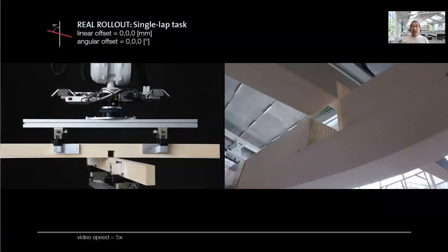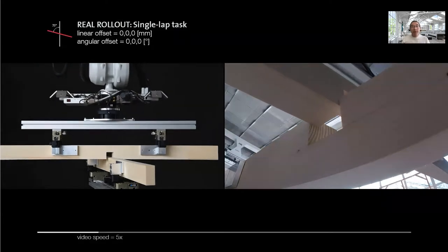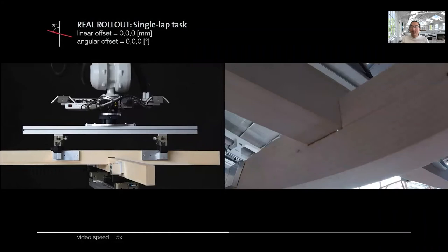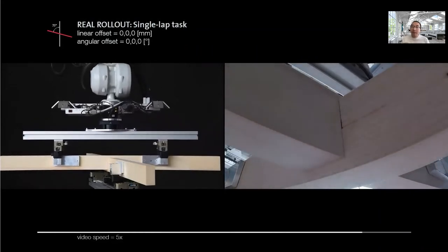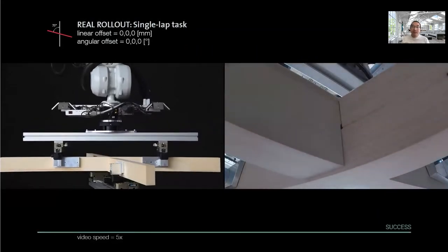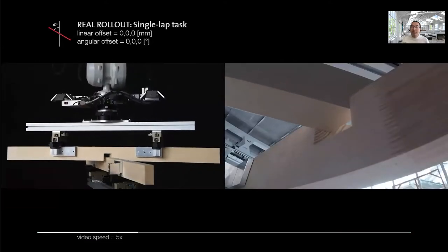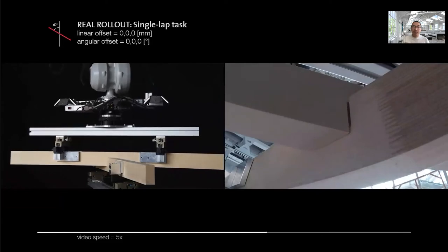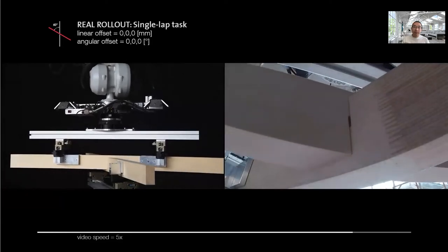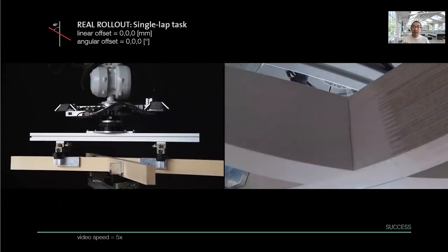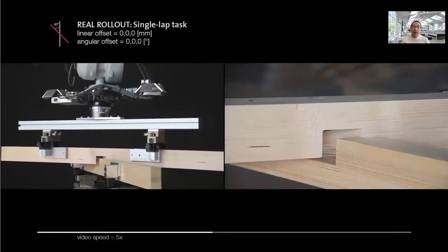We train our agents in pipeline simulation entirely, then deploy the trained policy on a real robot. This method works well in the insertion of a 75-degree single lap joint and also works well on a 60-degree single lap joint, but failed on the 45-degree single lap joint.